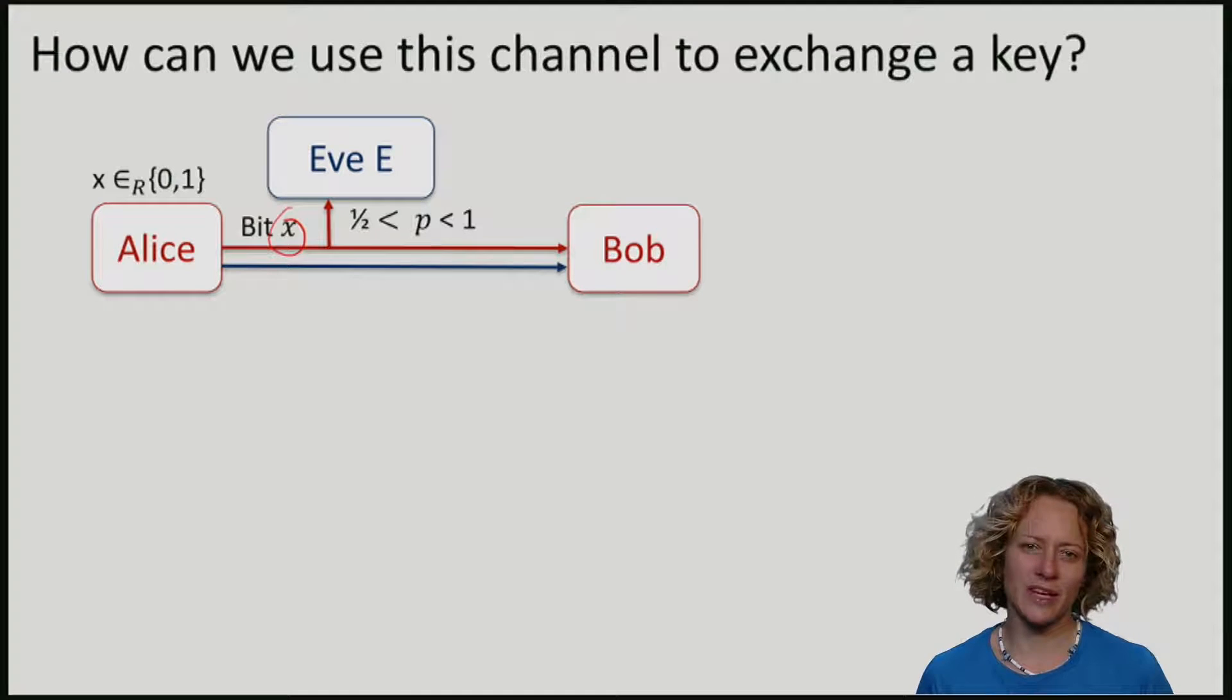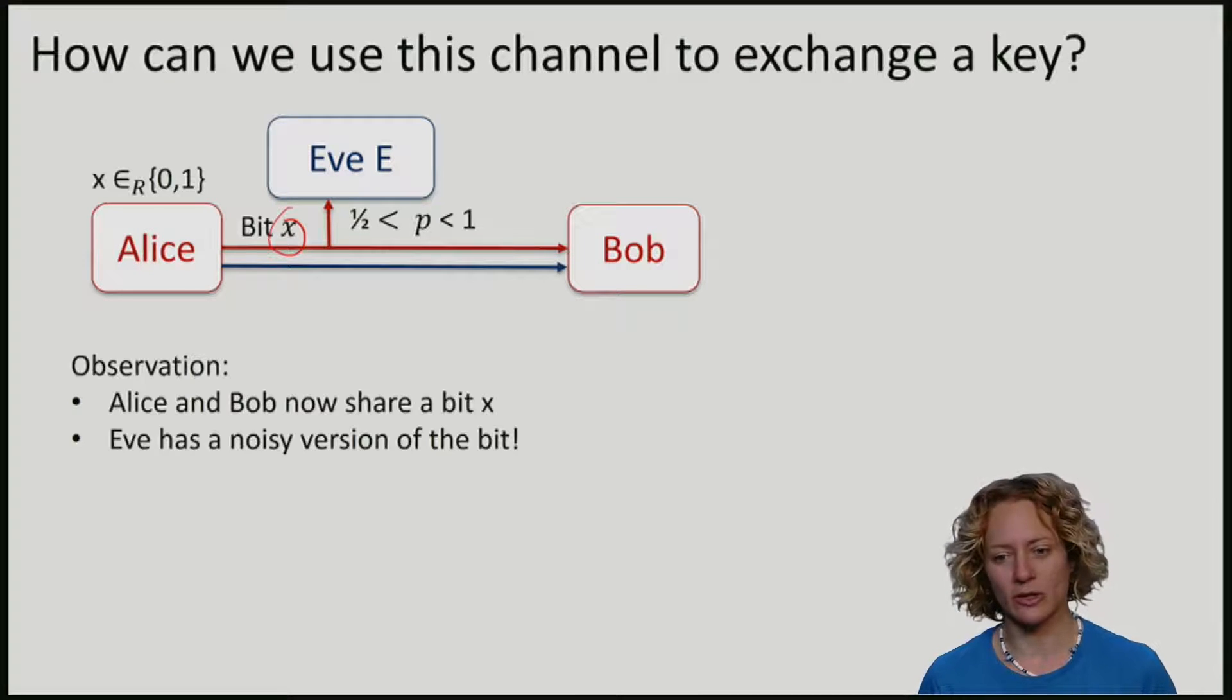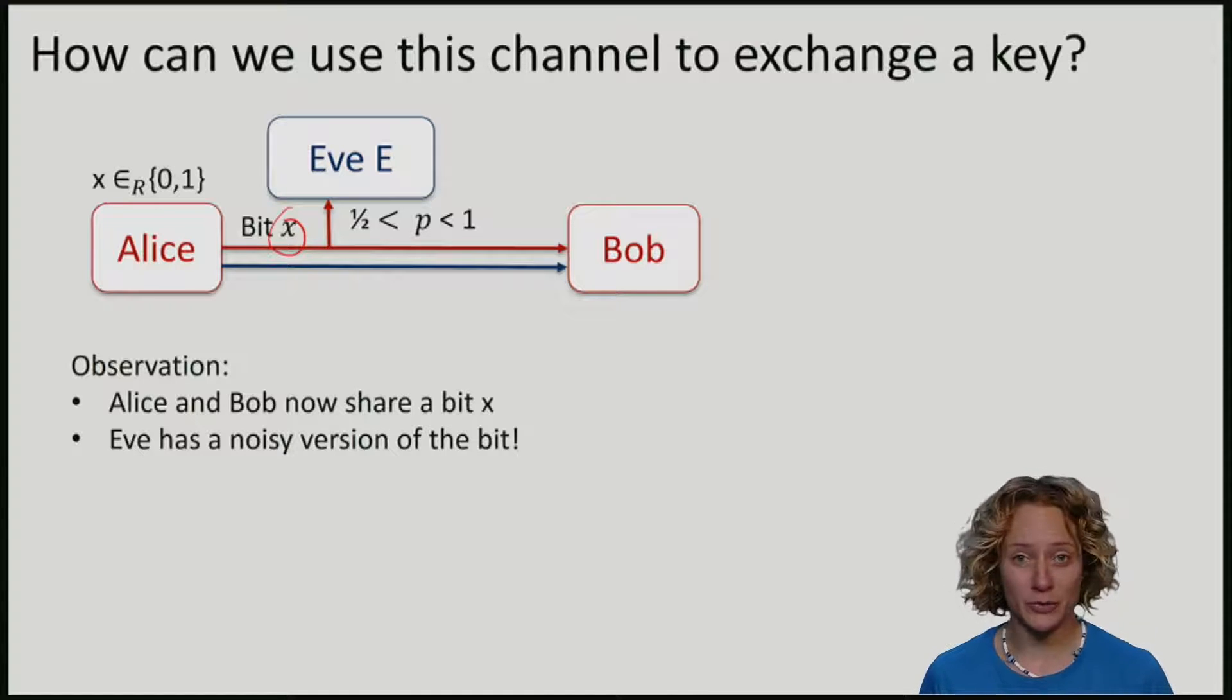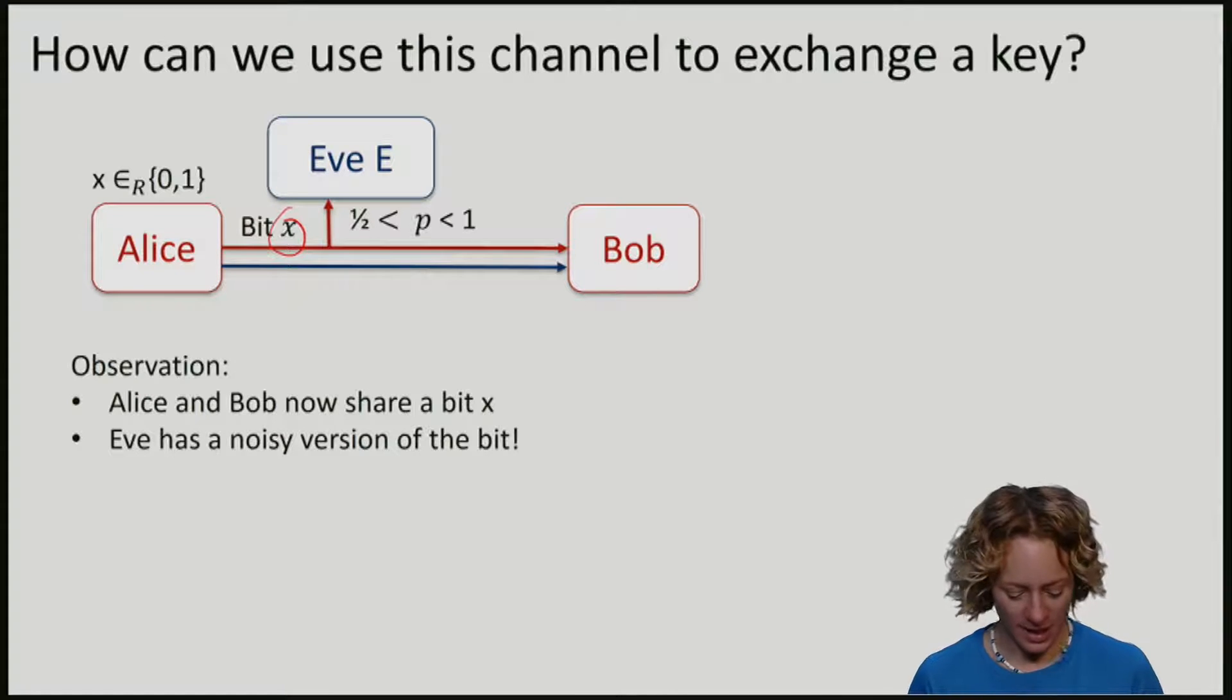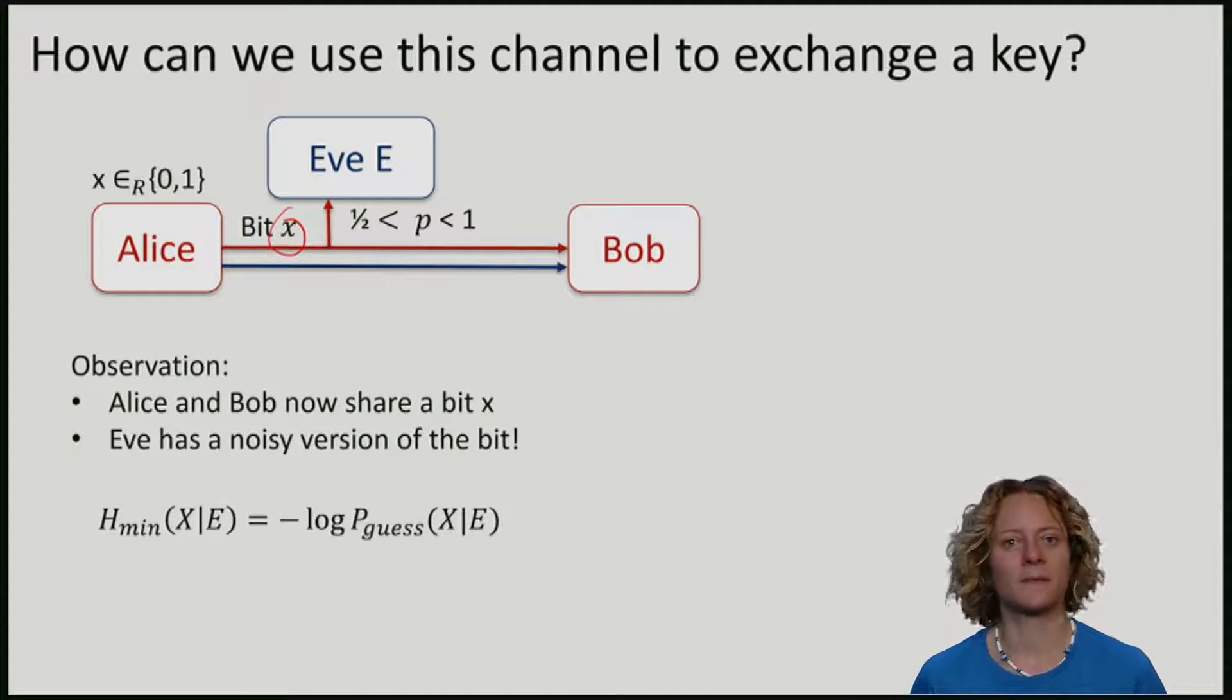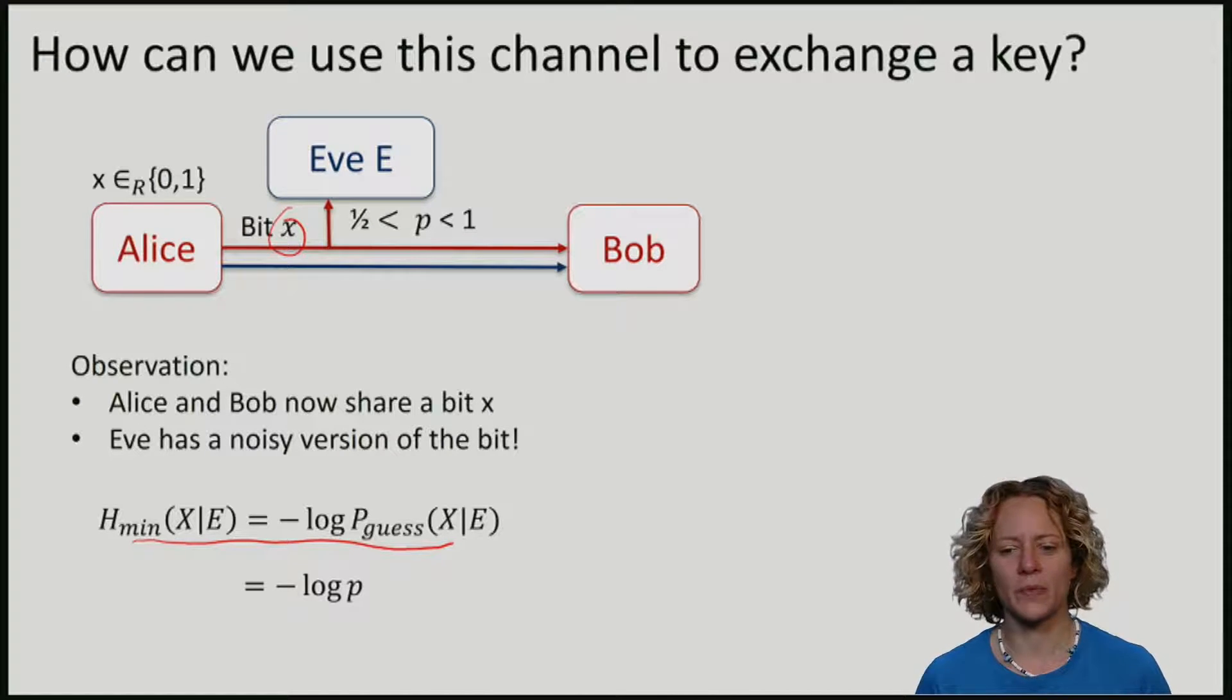Let's make some simple observations about this scenario. Alice and Bob now share a bit x, and Eve has a noisy version of this bit. What is the probability that Eve manages to guess the bit x? In other words, what is her min entropy about x? Note that for our choice of probability, Eve's min entropy is just minus the log of p.